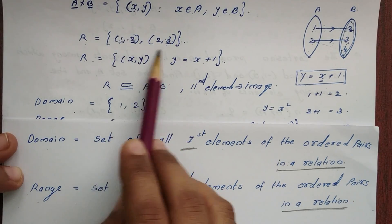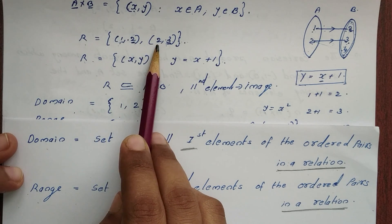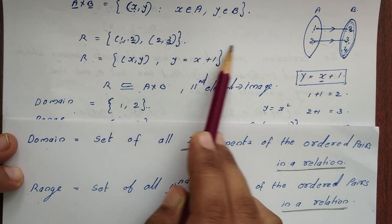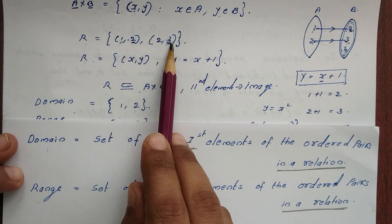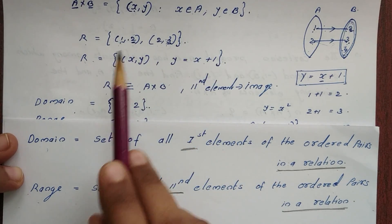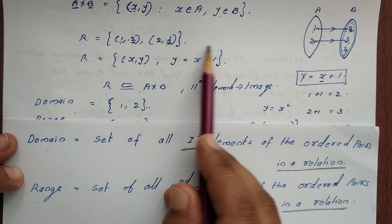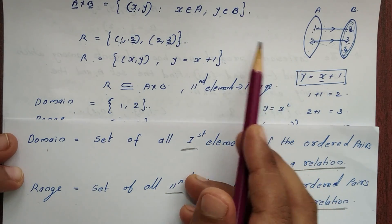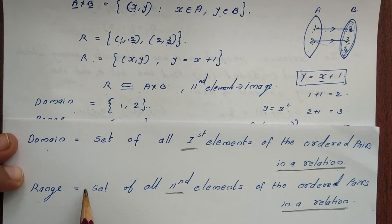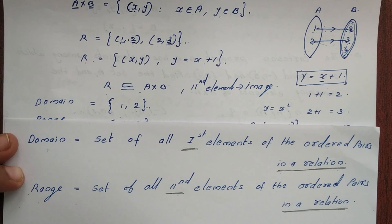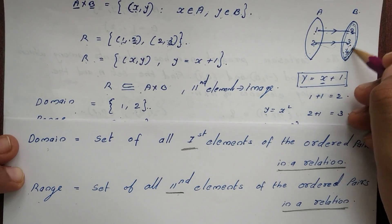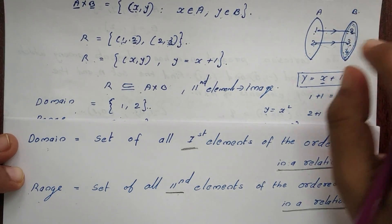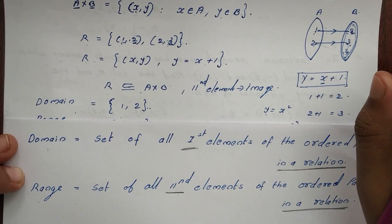The first elements in a relation form the domain. The second elements — such as {2, 3} — form the range. The whole set B is the co-domain, which is the full second set.